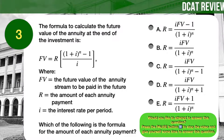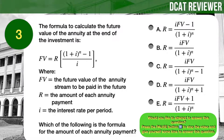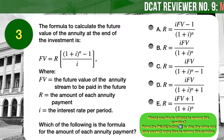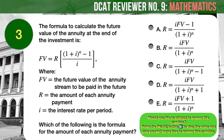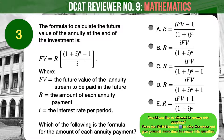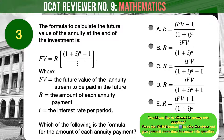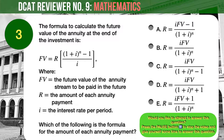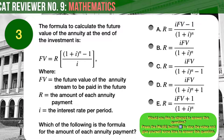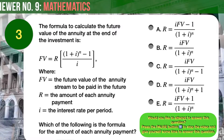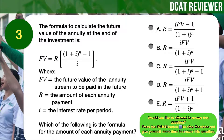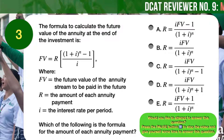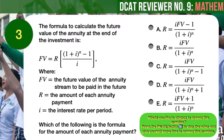Answer choice A: R equals the quantity i times Fv minus 1, over the quantity 1 plus i raised to n. Answer choice B: R equals i times Fv over the quantity 1 plus i raised to n. Answer choice C: R equals i times Fv over the quantity 1 plus i raised to n, minus 1. Answer choice D: R equals i times Fv over the quantity 1 plus i raised to n, plus 1. Answer choice E: R equals the quantity i times Fv plus 1, over the quantity 1 plus i raised to n.